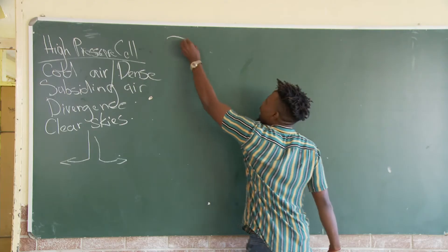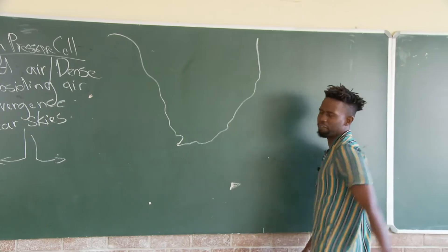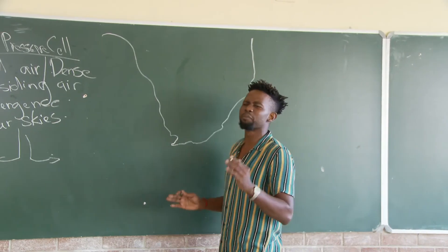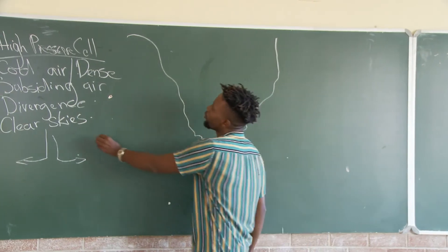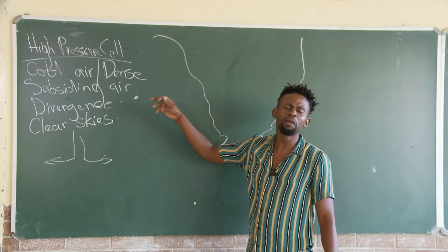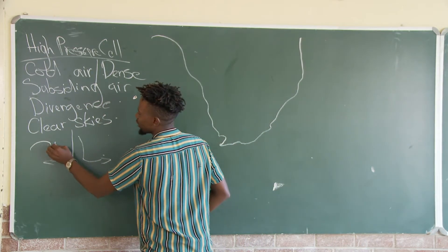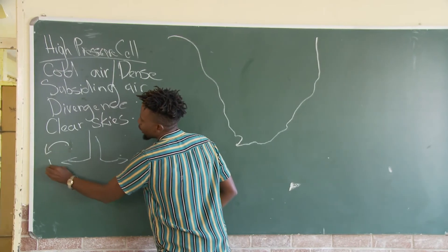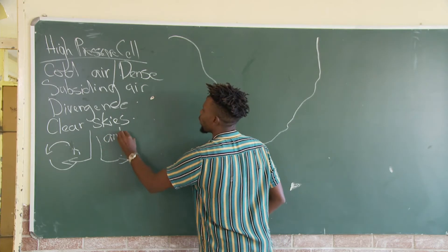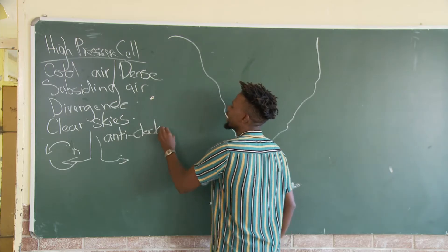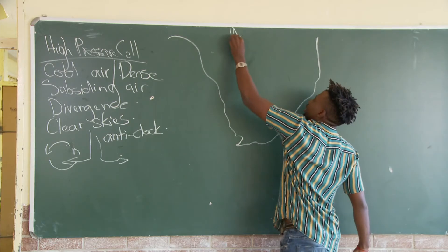Now we are looking at how high-pressure cells uguti afektara jani in South Africa. Because we are all living in the Southern Hemisphere, please don't forget one other important characteristic: the rotation is anti-clockwise. Anti-clockwise rotation. Hence, that is why we are calling these ama anti-cyclones.